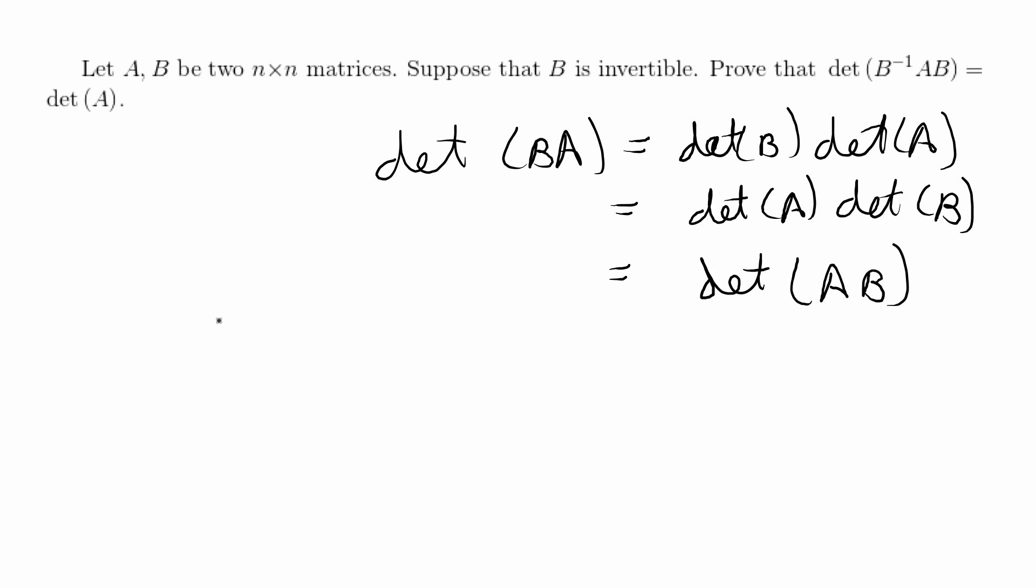And another property we're going to use, this is pretty basic, but B inverse times B is equal to the identity matrix and the size of this matrix is the same as the matrices that you're multiplying. So if B is an n by n matrix, then the identity will be the size n.